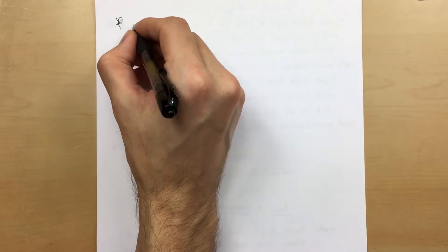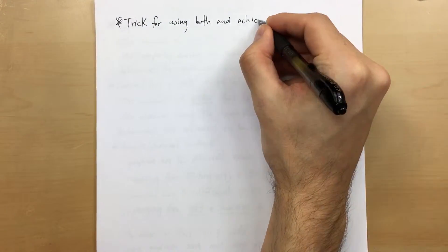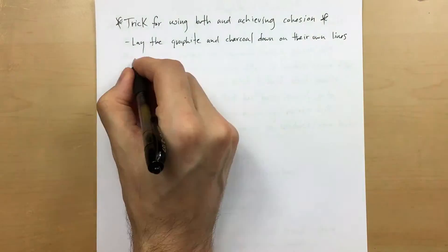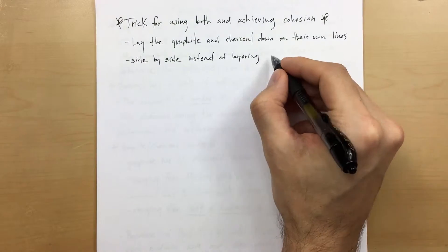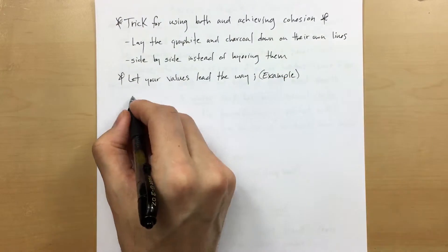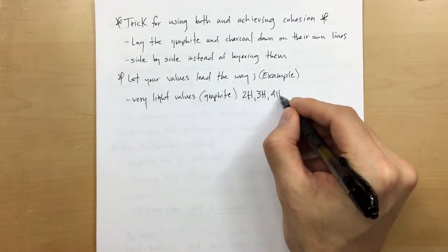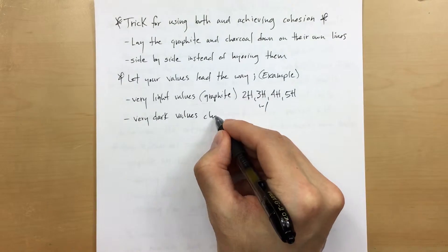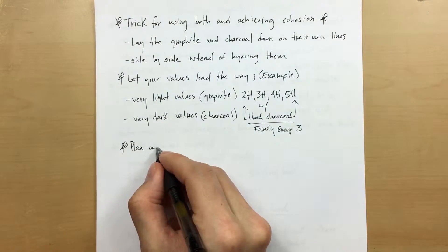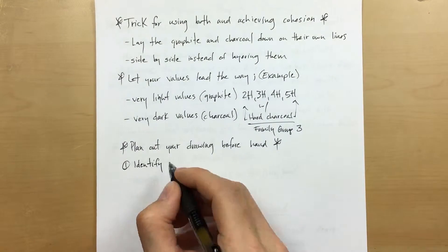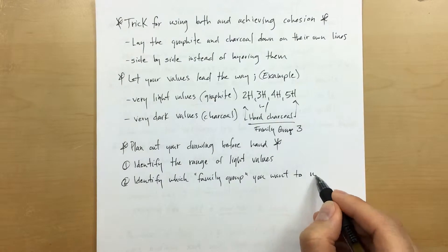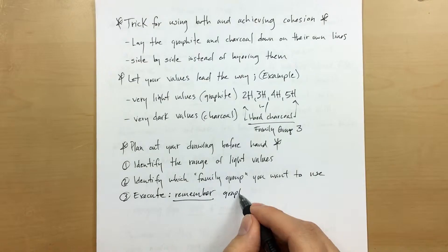So the short of it is don't layer it. However, try this trick for using both and achieving cohesion. Now the trick that I found around this is lay the graphite and charcoal down on their own lines. What I mean by that is lay them side by side instead of layering them. Let your values lead the way for you. Remember, very light values utilize your graphite, very dark values use charcoal. Your graphite tends to be lighter and charcoal tends to be darker, so make sure you use both of those in tandem and make them work for you. Plan out your drawings beforehand, identify the range of light values in your reference image, identify which family group you want to use, and then simply execute. Remember: graphite for light, charcoal for dark.